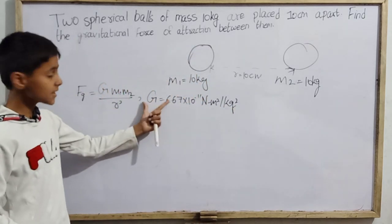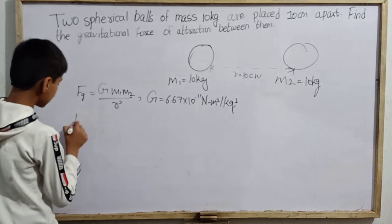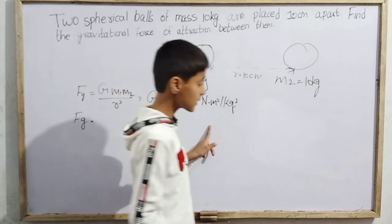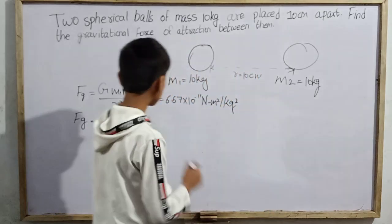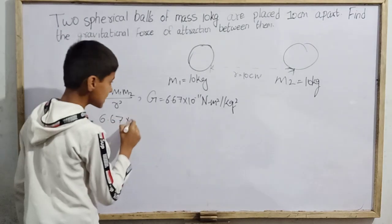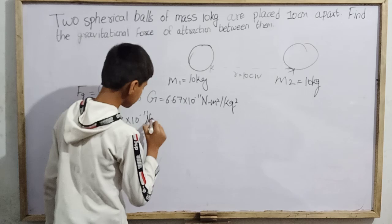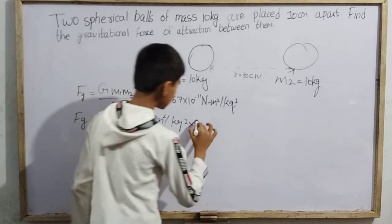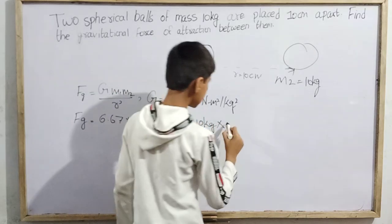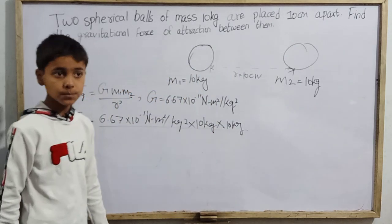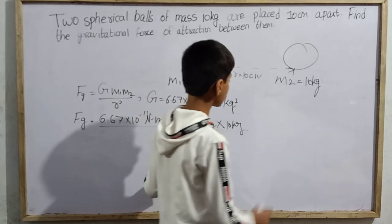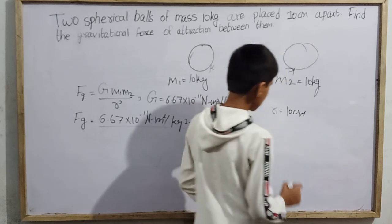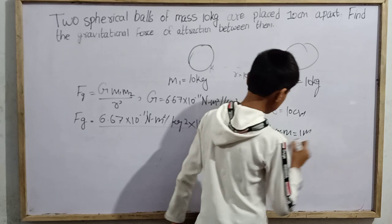Since I need to find Fg, I already have the universal gravitational constant G, which is valid in all circumstances as a fixed value. Substituting the values: Fg = G × m1 × m2 / r². I have m1 = 10 kg, m2 = 10 kg. For the distance, I need to convert 10 cm to SI units, since all units must be in the SI system.